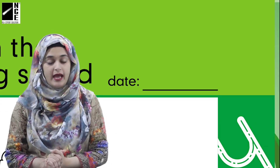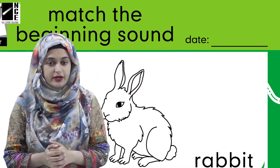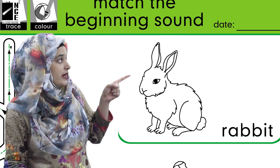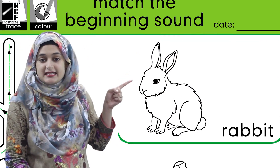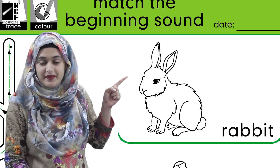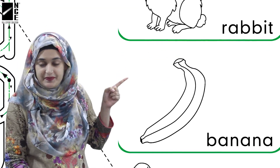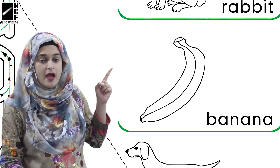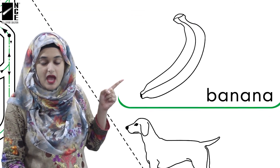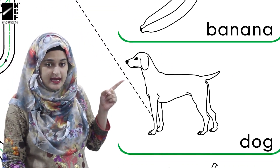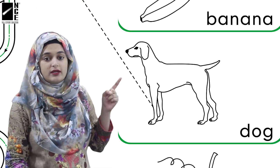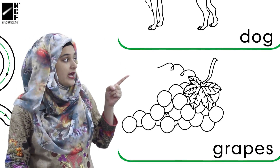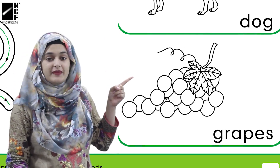Children, we have some pictures over here. So let's read them first. The first one is a rabbit. Then we have banana. After that we have dog. And in the last we have grapes.